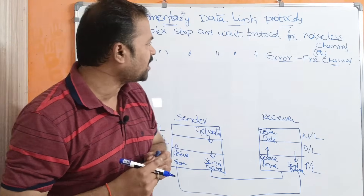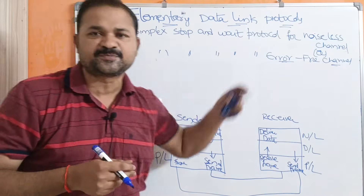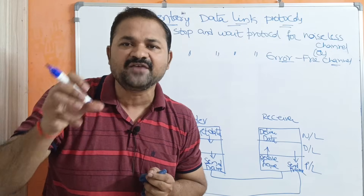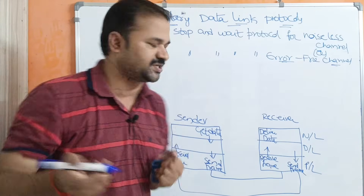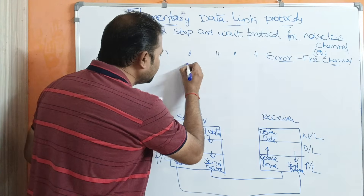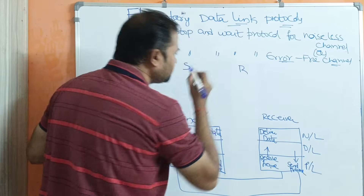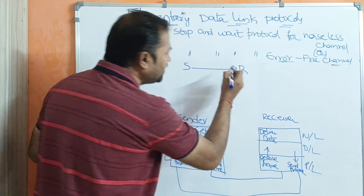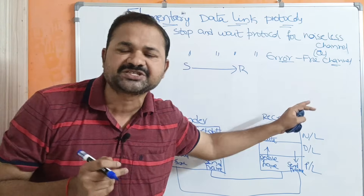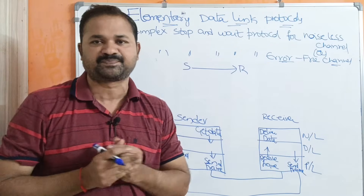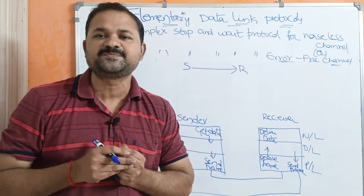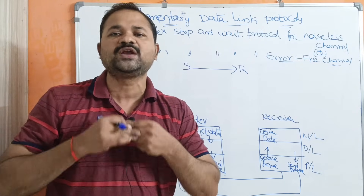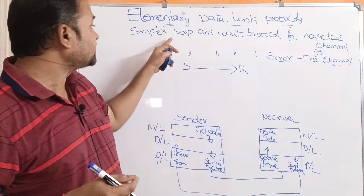In this video we are going to discuss about this protocol. The name itself specifies the meaning. Simplex means the data will be transmitted in only one direction. Here we have two machines — sender machine and receiver machine. The sender can transmit data to the receiver, but the receiver cannot send data to the sender. That is what simplex means.